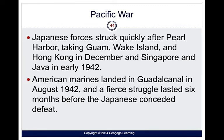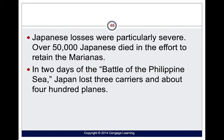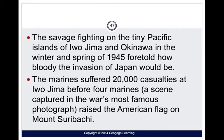In the Pacific theater, the Japanese struck quickly after Pearl Harbor, taking Guam, Wake Island, and Hong Kong in December, and Singapore and Java in 1942. American Marines landed in Guadalcanal in August 1942, and a fierce struggle lasted six months before the Japanese conceded defeat. The Allies then invaded the Marshall Islands, the Admiralty Islands, Hollandia in Dutch New Guinea, the Marianas, the Palaus, and the Philippines. The Battle of Leyte Gulf gave control of the Pacific to the Allies. Over 50,000 Japanese died in the effort to retain the Marianas, and in two days of the Battle of the Philippine Sea, Japan lost three carriers and about 400 planes.